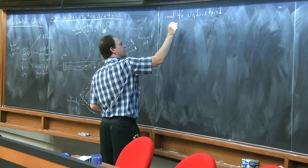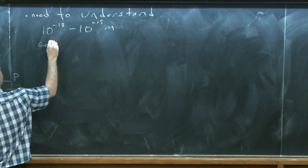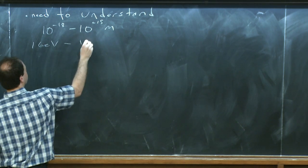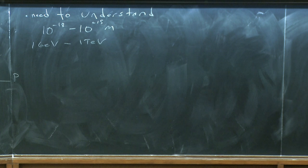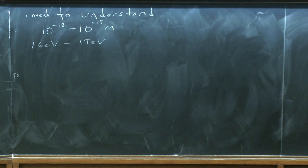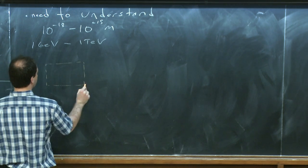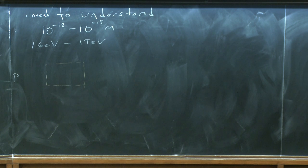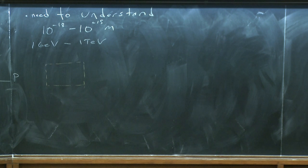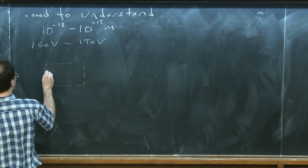That range — from 10 to the minus 18 to 10 to the minus 15 meters — corresponds to about 1 GeV to 1 TeV in energy scale. We're probing all these scales and need to understand them. What's inside the box? It could be multiple different things. This is the short distance process where we can think about things just in terms of simple Feynman diagrams.